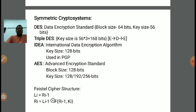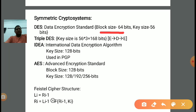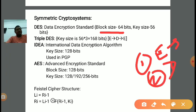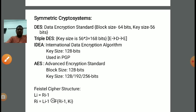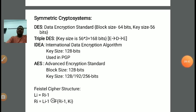In Triple DES, we are performing three algorithms in sequence. First we do encryption of the plain text in 64-bit block size, then on the output we apply decryption, and on that output we apply encryption again. Block size remains 64-bit, but key size will be triple the DES key size. In DES the key size is 56-bit; in Triple DES it will be three times 56, which means 168 bits. So block size is 64-bit and key size is 168 bits in Triple DES.